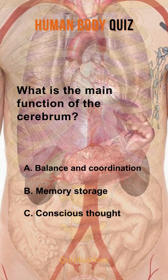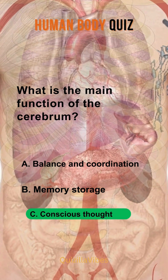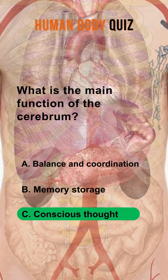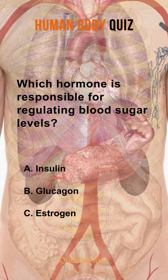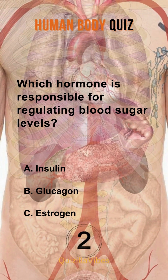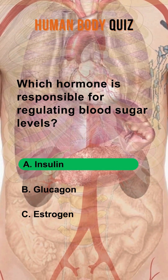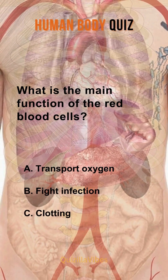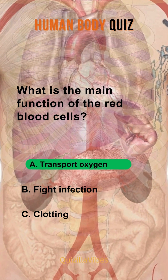What is the main function of the cerebrum? Conscious thought. Which hormone is responsible for regulating blood sugar levels? Insulin. What is the main function of the red blood cells? Transport oxygen.